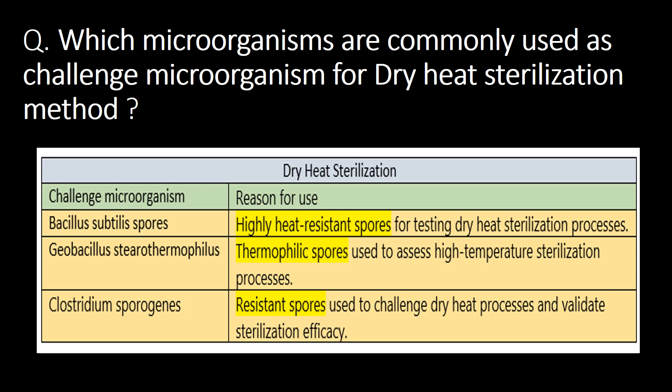Which microorganisms are commonly used as challenge microorganisms for dry heat sterilization? In the pharmaceutical industry, dry heat sterilization is commonly used in depyrogenation tunnels and depyrogenation ovens. Refer to the table below for commonly used challenge microorganisms. These are Bacillus subtilis spores, Geobacillus stearothermophilus, and Clostridium sporogenes. The common reason for selecting them is their property of being highly heat-resistant spores.